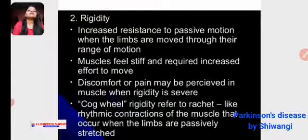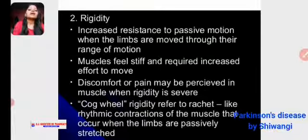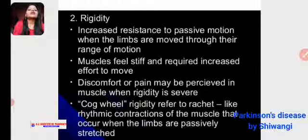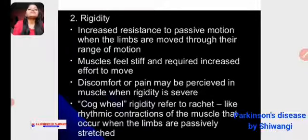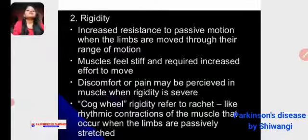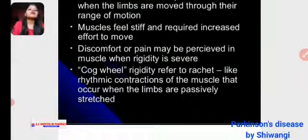Rigidity: there is increased resistance to passive motion when the limbs are moved through their range of motion. Muscles feel stiff and require increased effort to move. There may be discomfort and pain. If rigidity is severe, cogwheel rigidity refers to the ratchet-like rhythmic contraction of muscles that occurs when the limbs are stressed.